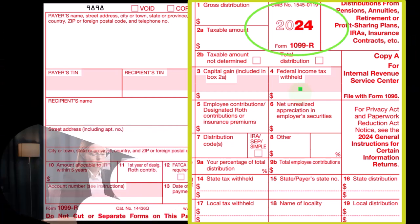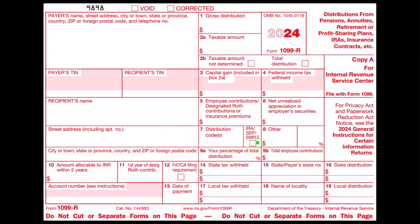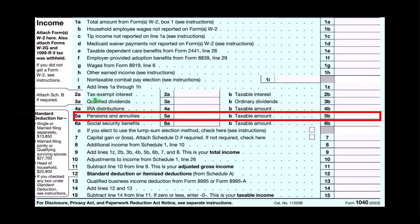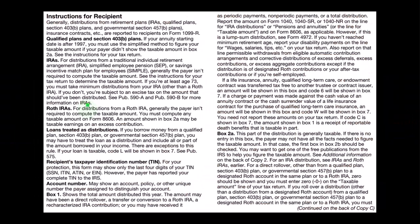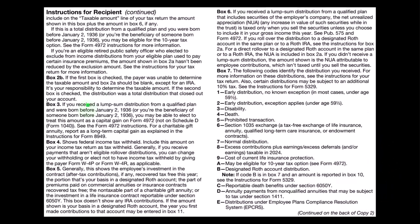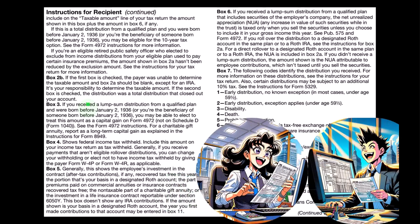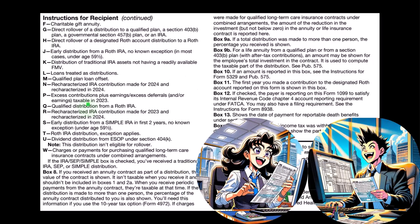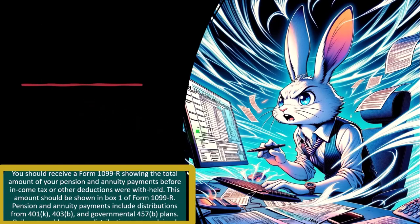We're expecting to see more 1099-Rs and fewer W-2s. The distribution code is quite important — that box will help us determine whether the amount goes on line 4 or line 5, whether it's an IRA or a pension and annuity. If you have questions about those items, you can look at the instructions for Form 1099-R on the IRS website, which will help you interpret what's on the form. Now let's take a look at lines 5A and 5B — pensions and annuities.